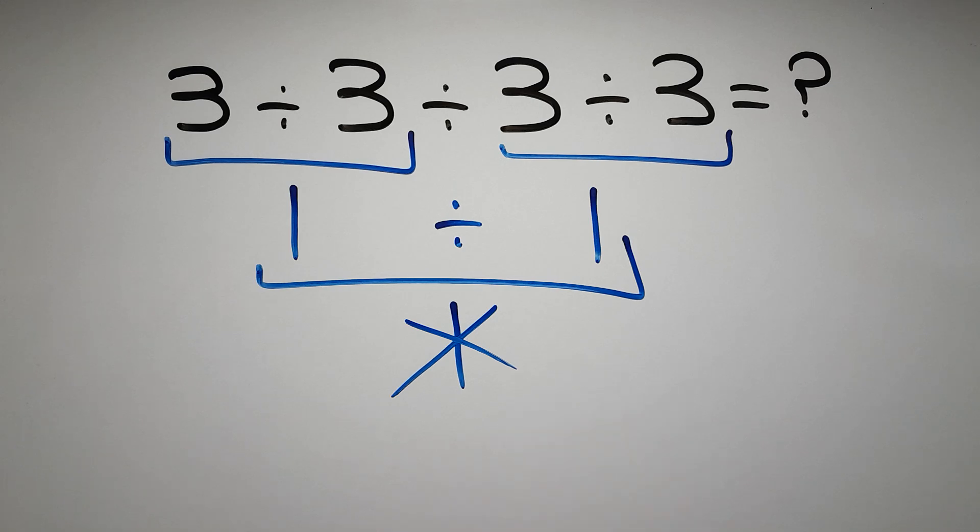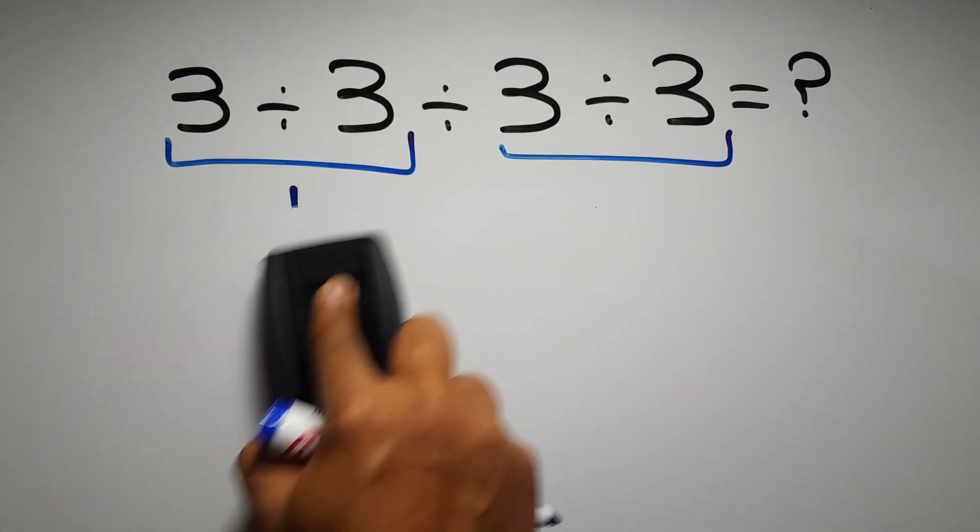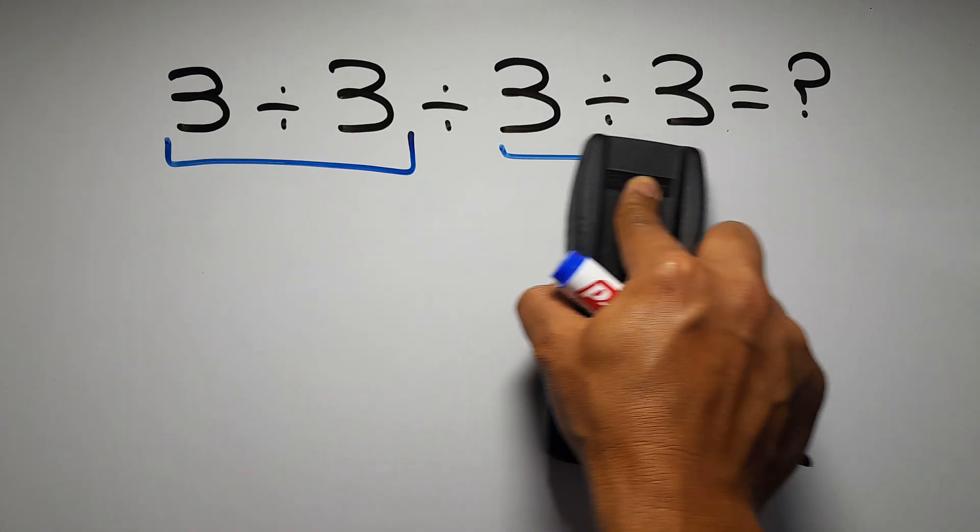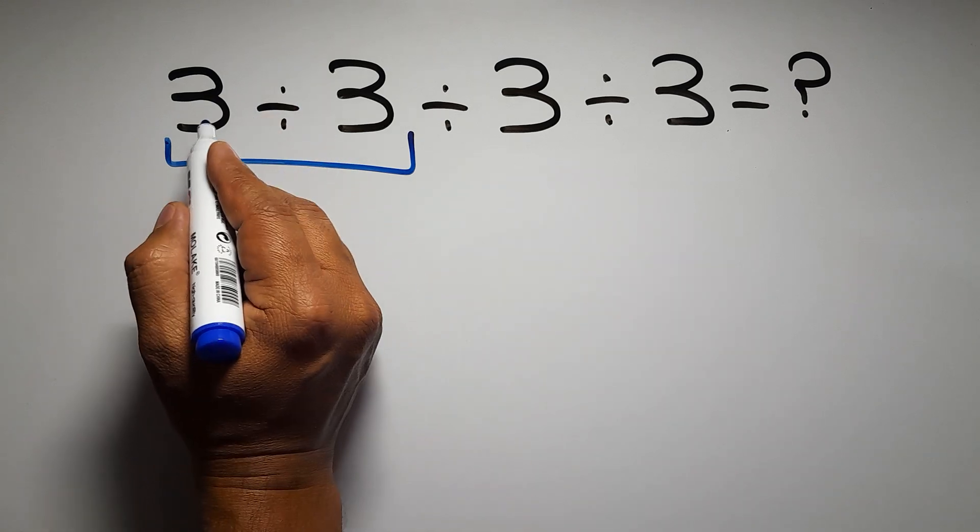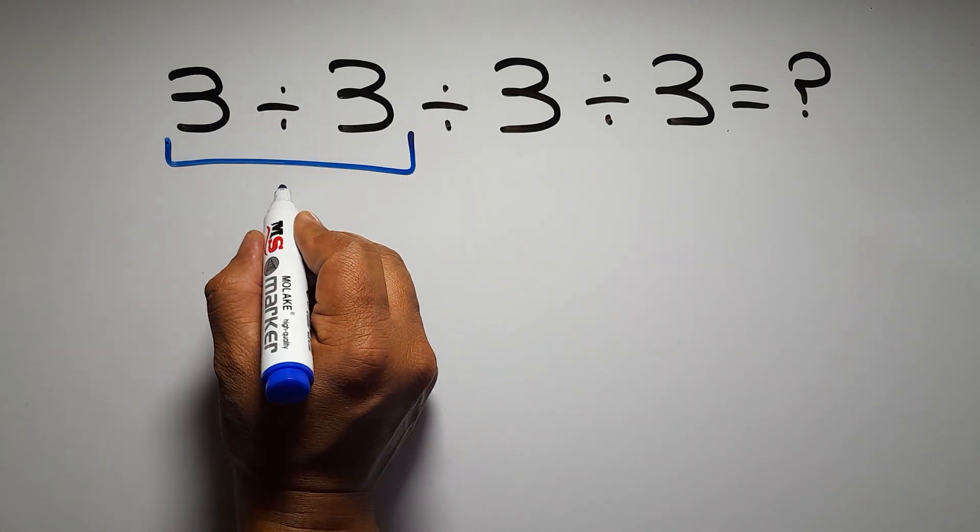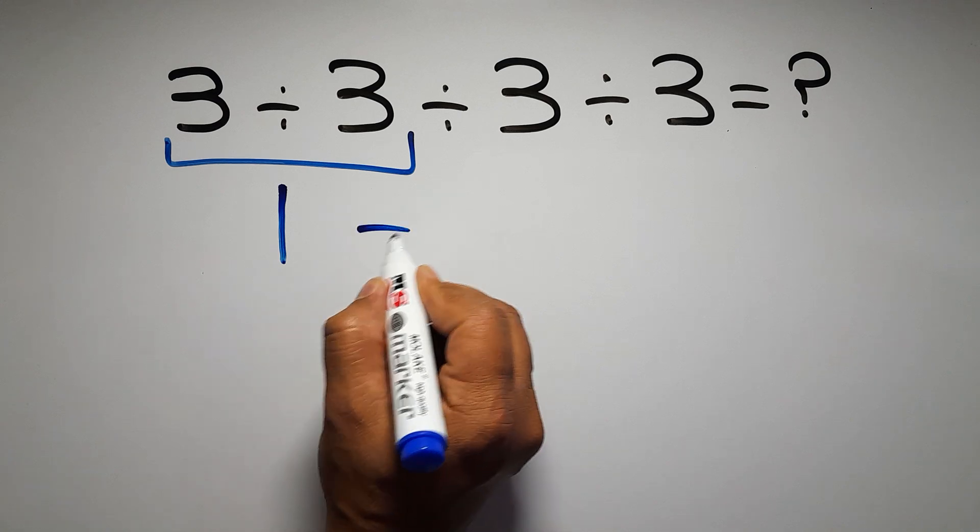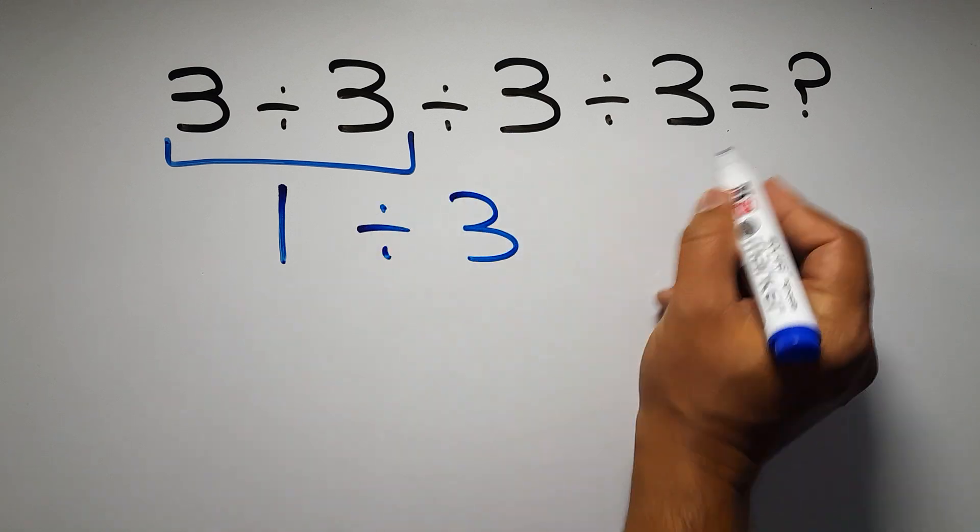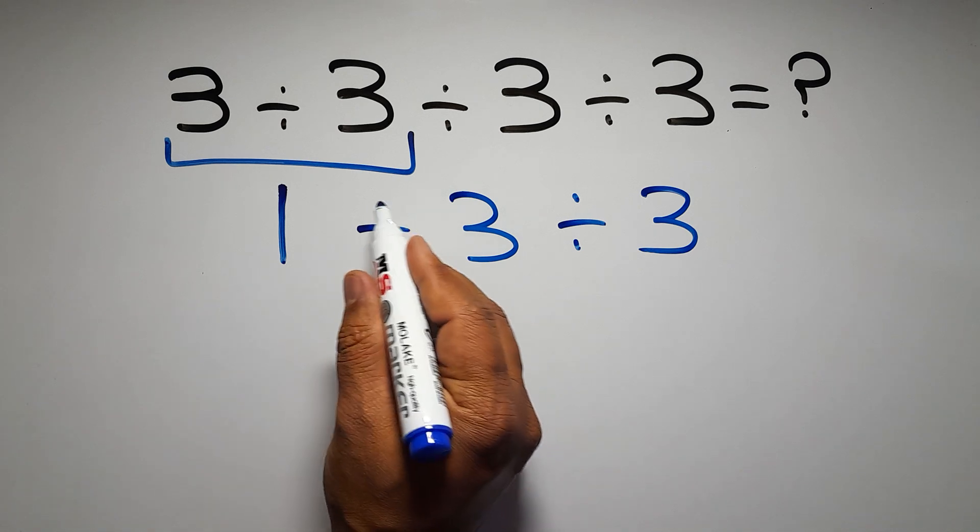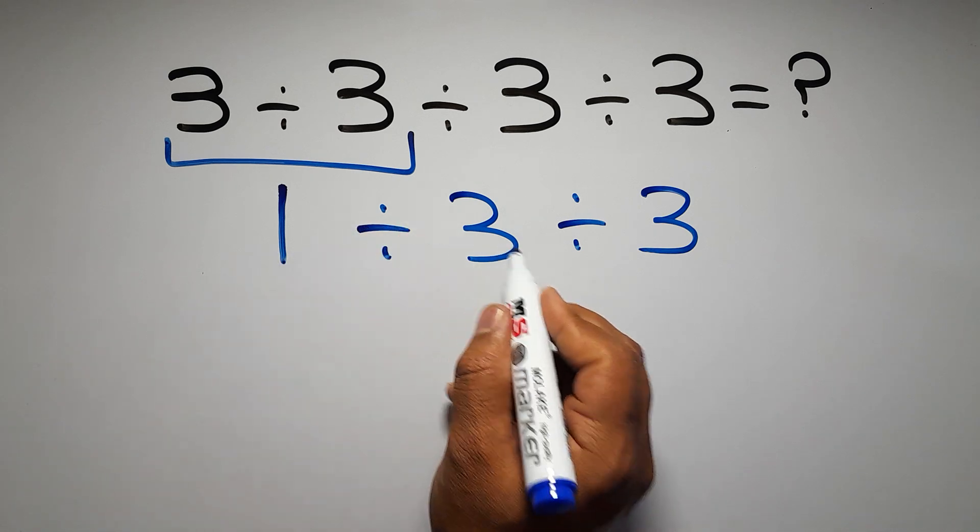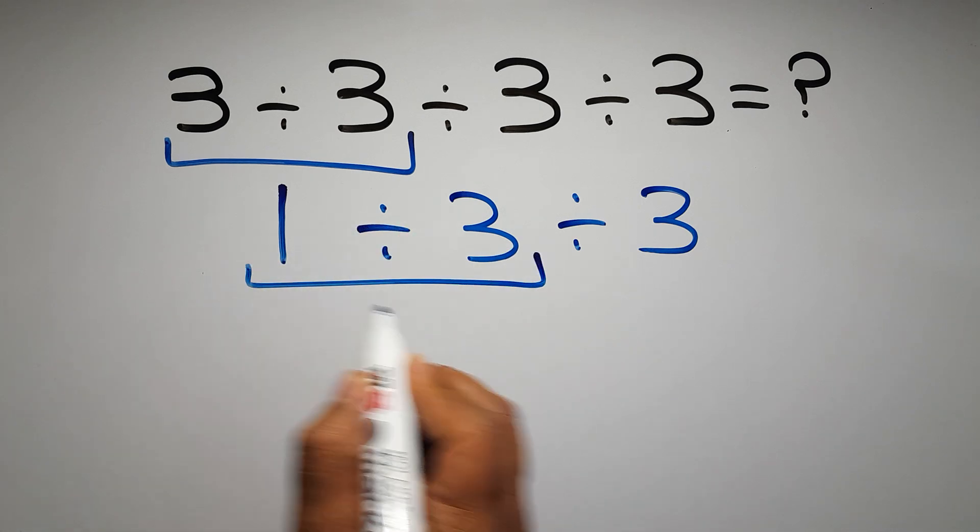So first this division: 3 divided by 3 is just 1, so 1 divided by 3, and again divided by 3. Now we have to do this division. 1 divided by 3 can be written as 1 over 3,